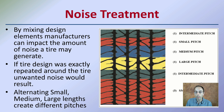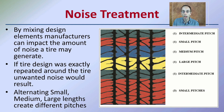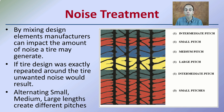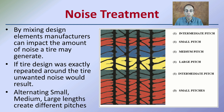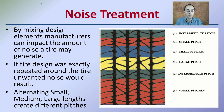Something you may not have realized is that there's something called a noise treatment on tires. Tires don't have the exact same pattern repeating equally throughout the entire circumference. By mixing design elements, manufacturers can impact the amount of noise a tire generates. If designs were exactly repeated, unwanted noise would occur, especially going down the highway. Alternating small, medium, and large lengths create different pitches and reduce overall noise, as you can see indicated here with different length elements inserted around the tire tread.